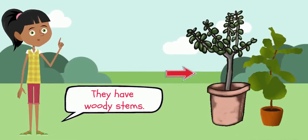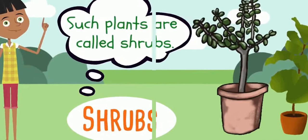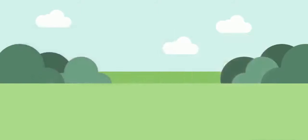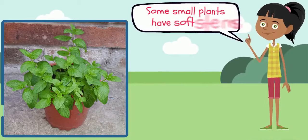Some plants are small. They have woody stems. Such plants are called shrubs. For example, rose plant, hibiscus plant, and cotton plant.